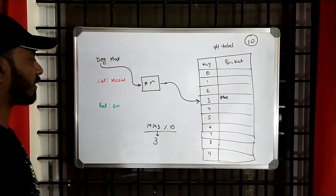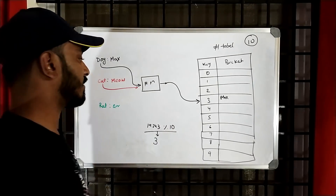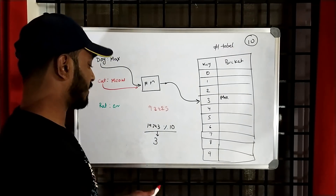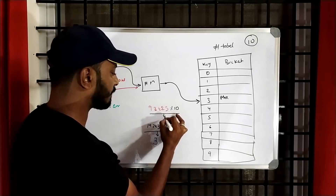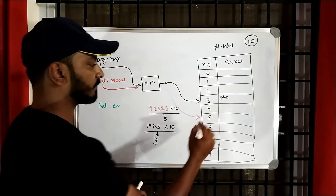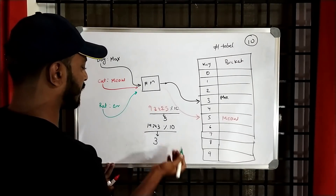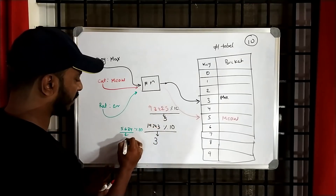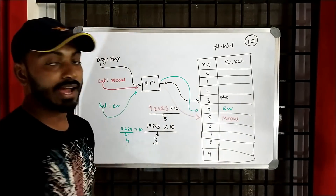Now let's try to save cat. We feed cat to the hash function, and it emits another big number — say 93425. We do modulo 10 and get 5, so we save the value meow at location 5. Similarly for rat, the hash function generates a number like 56340, modulo 10 gives us 4, and we save the value grr at location 4. So this looks good.